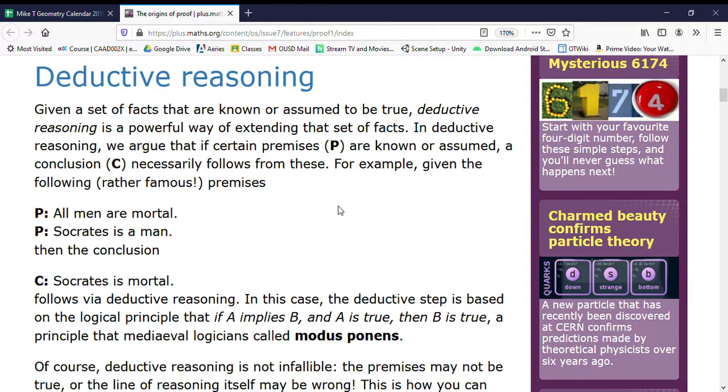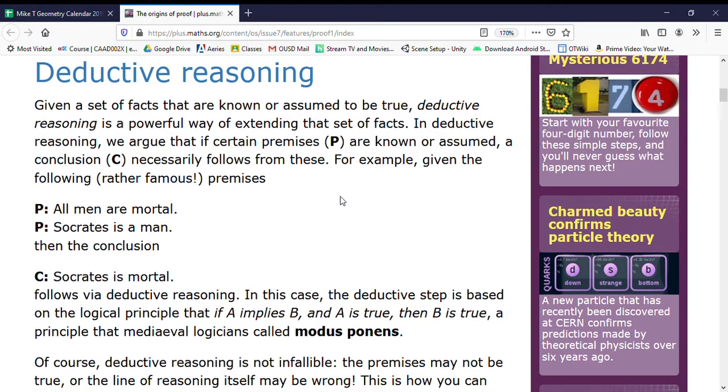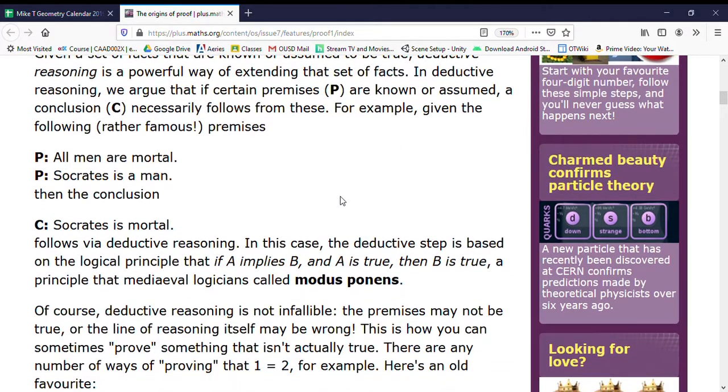In this case, the deductive step is based on the logical principle that if A implies B and A is true, then B is true—a principle that medieval logicians called modus ponens.